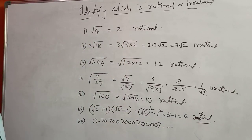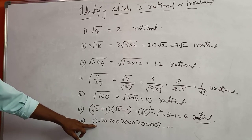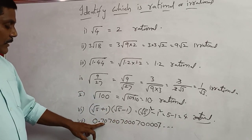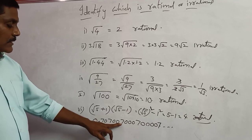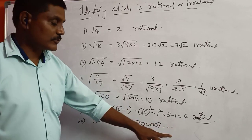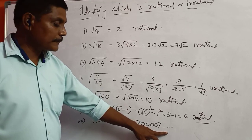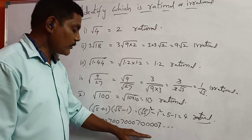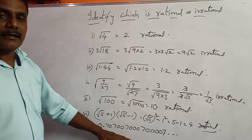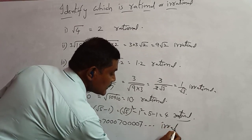Next example: 0.7007000... — after 7, then 2 zeros; next after 7, 3 zeros; next after 7, 4 zeros; and so on. This is non-terminating and non-recurring. Therefore this number is non-terminating and non-recurring, so what we call this is irrational.